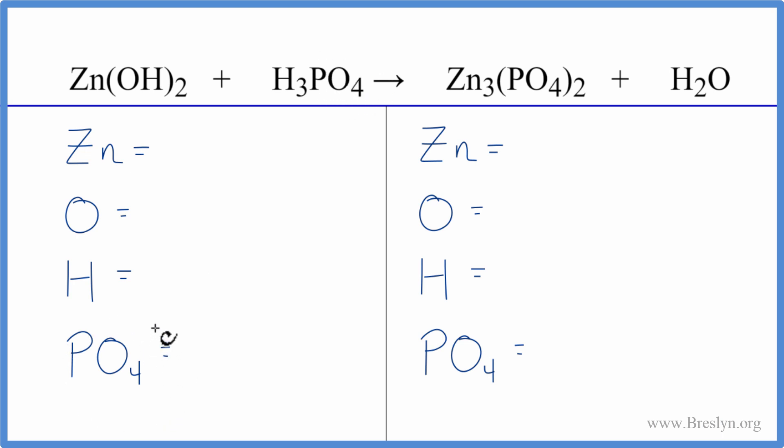We have one zinc, we have two times the one, that gives us two oxygens, two times the one hydrogen, so we have two of those, plus we have these three. So we have five hydrogen atoms, and then we have just the one phosphate we talked about earlier. On the product side, we have three zincs, then we have just the one oxygen here. We're going to ignore this because it's in the phosphate group. Hydrogens, we have two, and then we have two of these phosphates here.